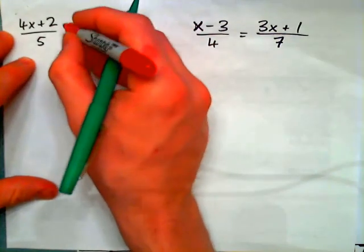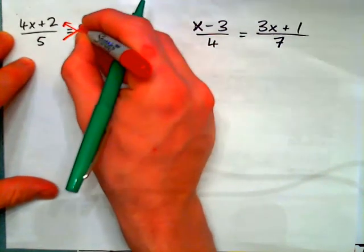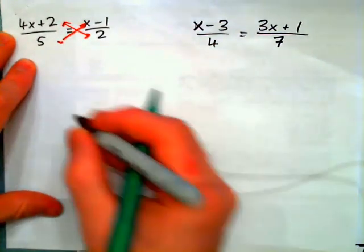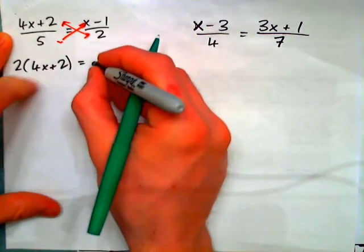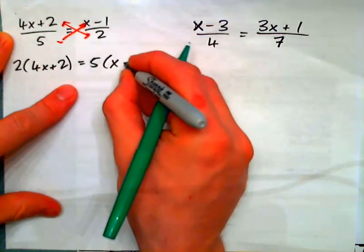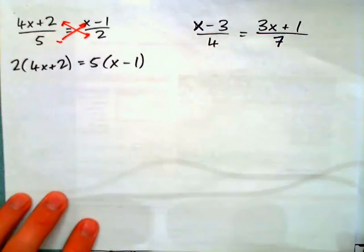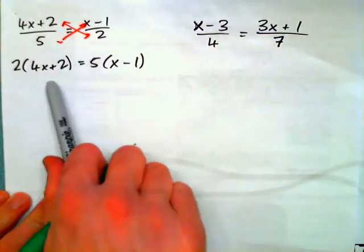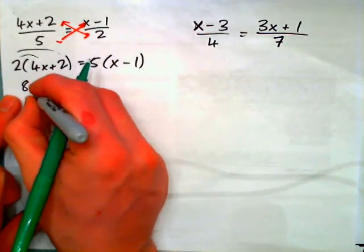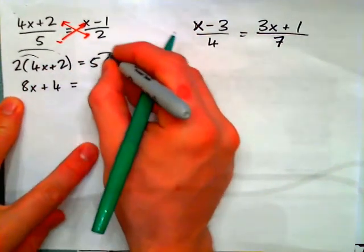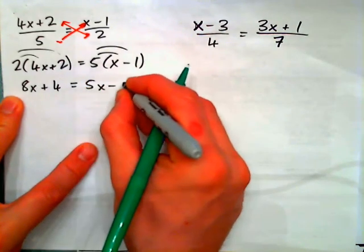We can cross multiply on this one. And this time we have 2 times 4x plus 2 equals 5 times in parentheses x minus 1. Now we need to simplify both sides. So apply the distributive property and get 8x plus 4 equals 5x minus 5.